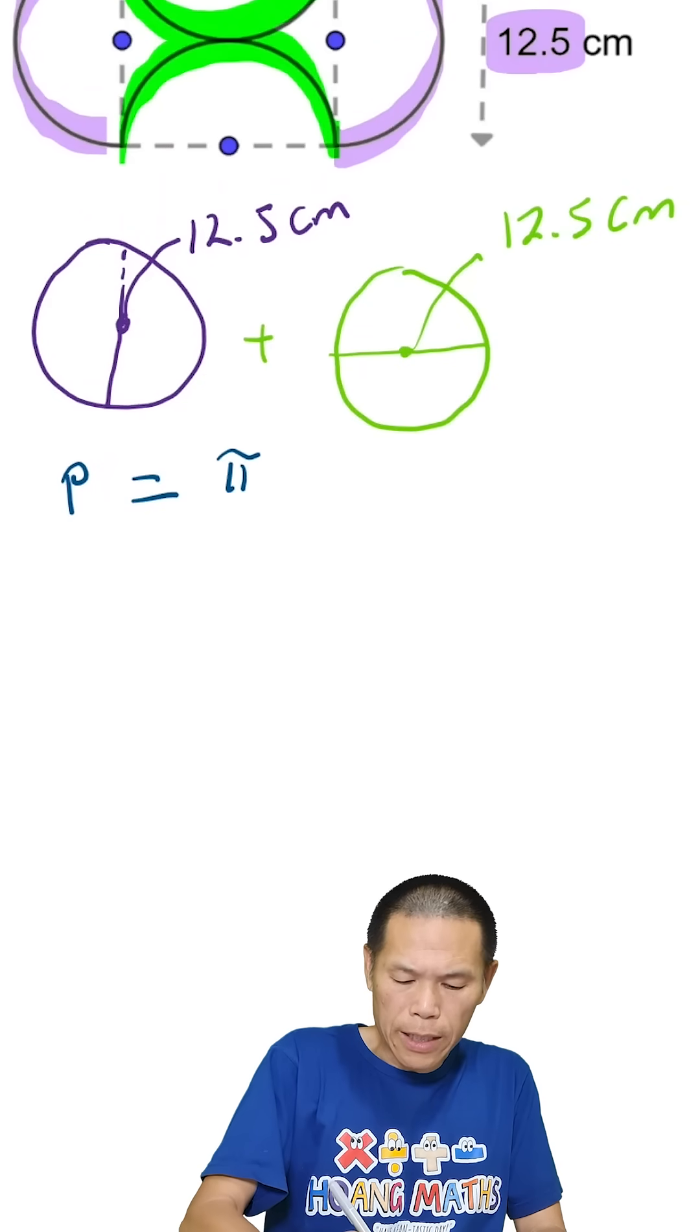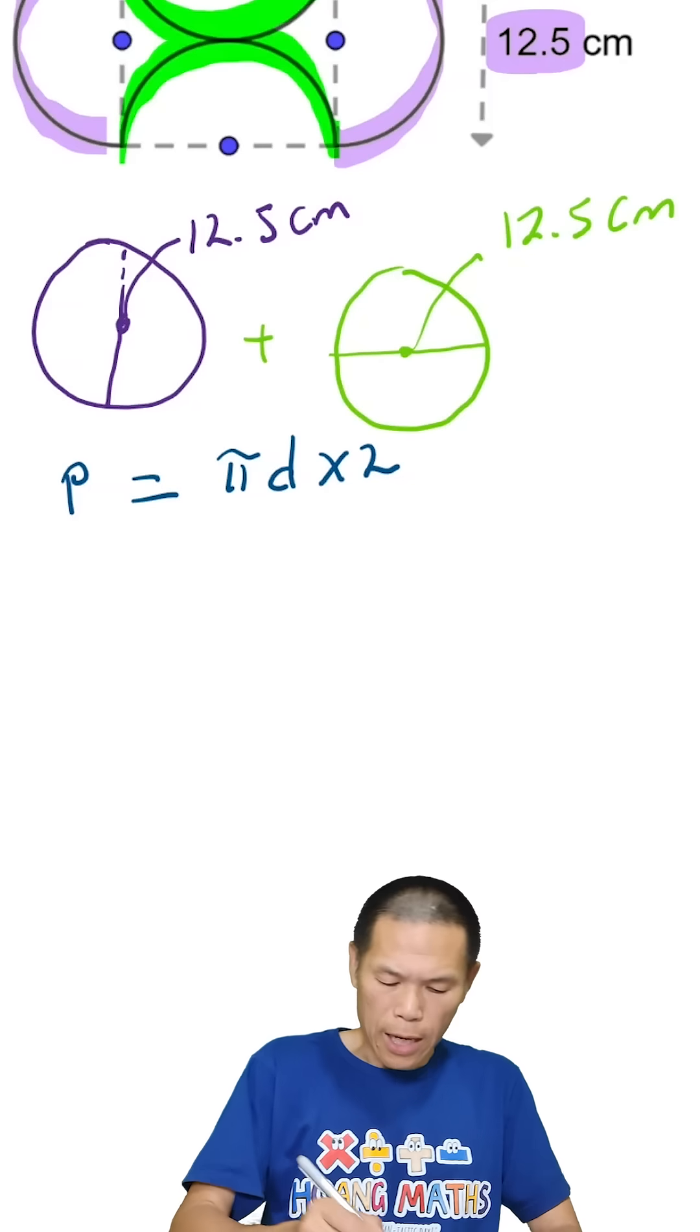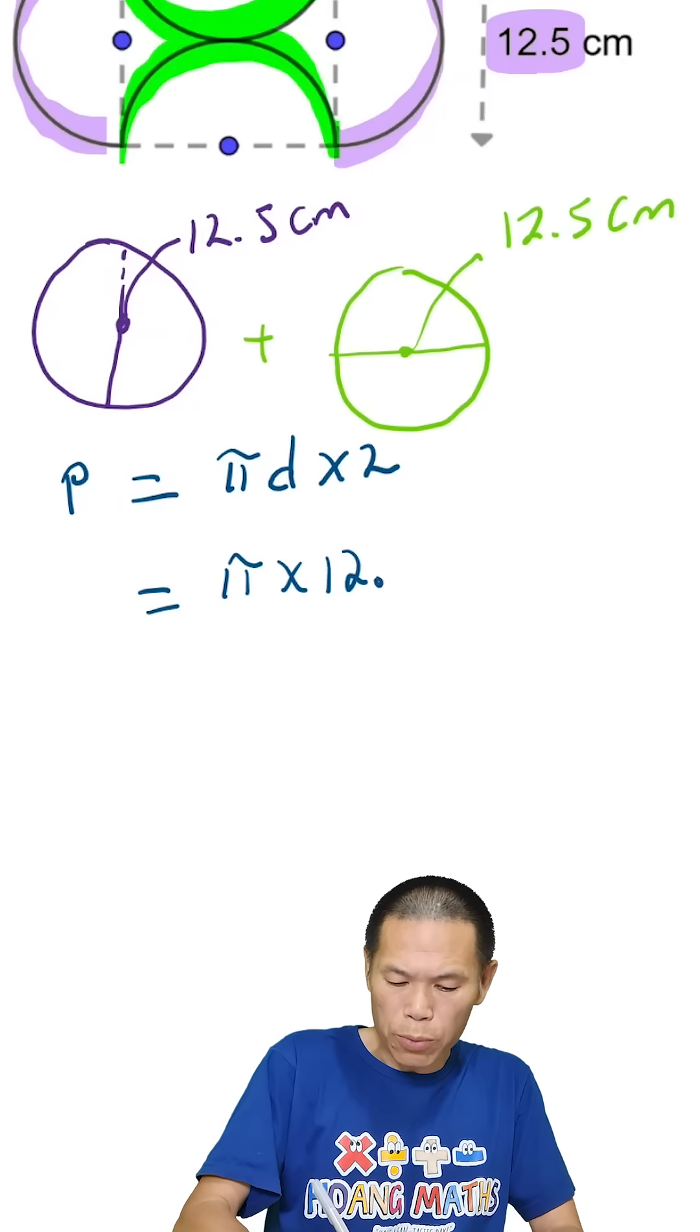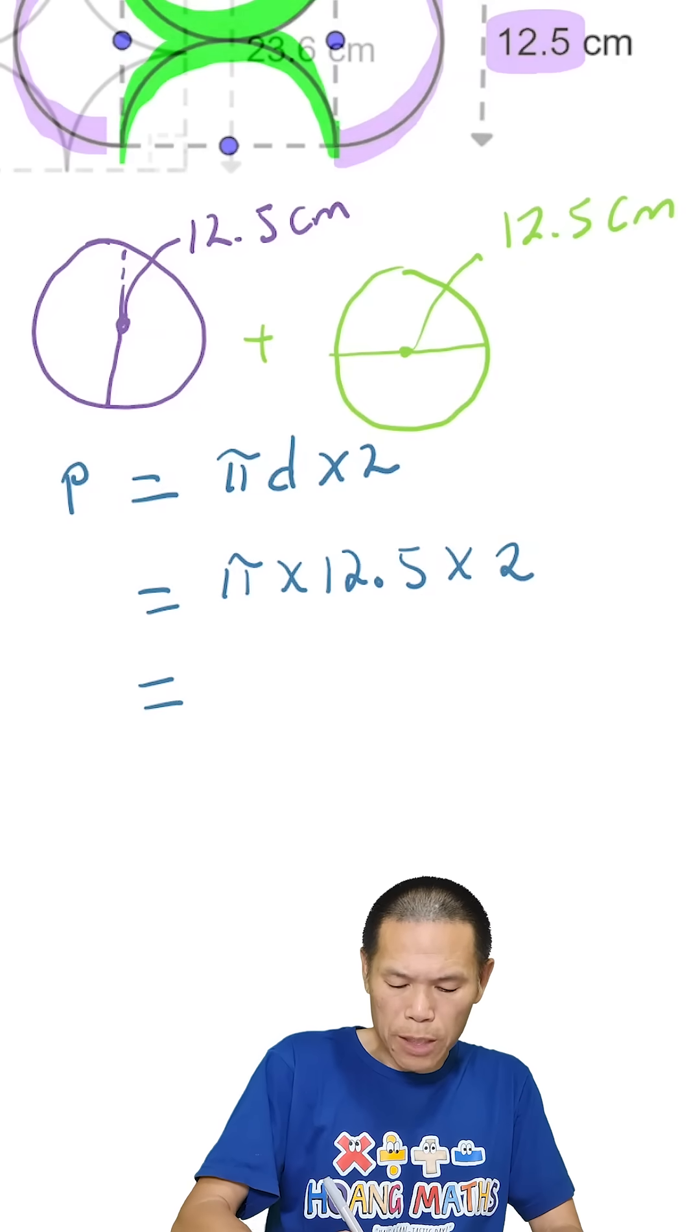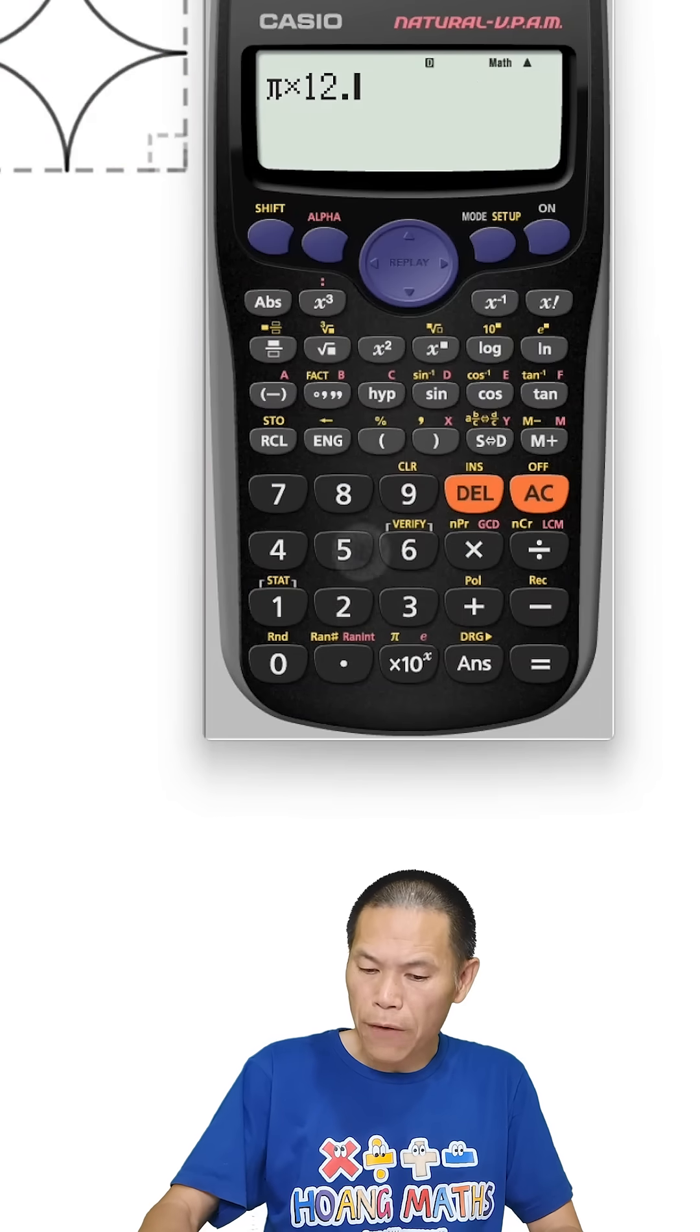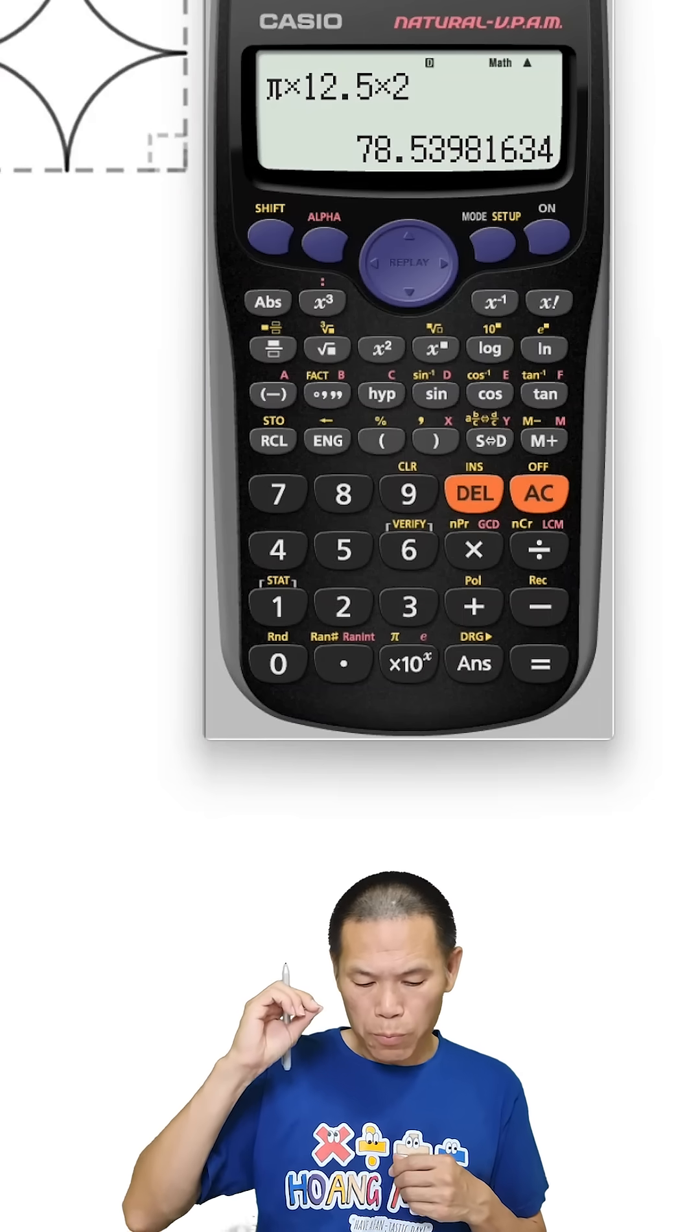Perimeter is pi times d, and we times two because two circles, and the diameter is 12.5. So pi times 12.5 times 2. Of course you can do one circle and work out the other circle and add them up, but this is just quicker.